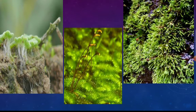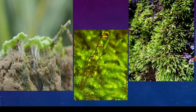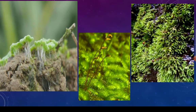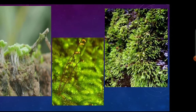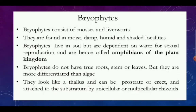Bryophytes require a substratum — a fixed support for their growth. This can be a stone, bark of a tree, or any hard substance. The characteristics of bryophytes are that they consist of mosses and liverworts. Liverworts include Funaria and Marchantia, which looks like a liver and so is called a liverwort.